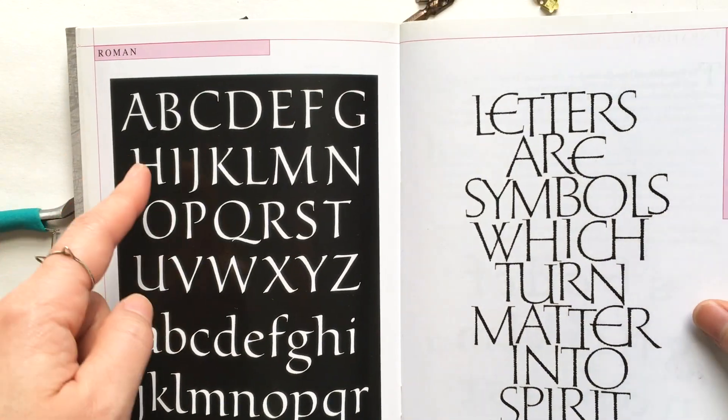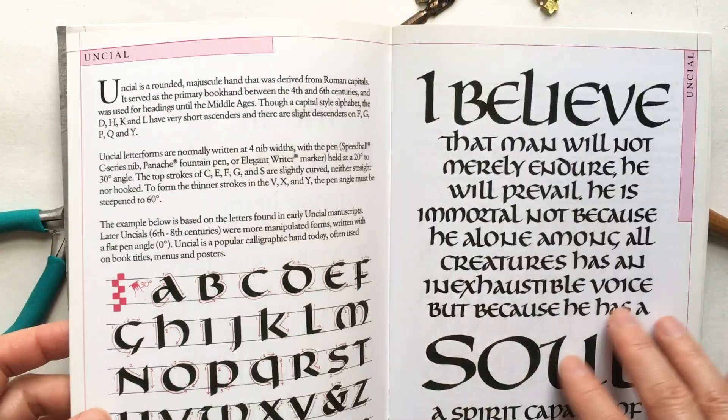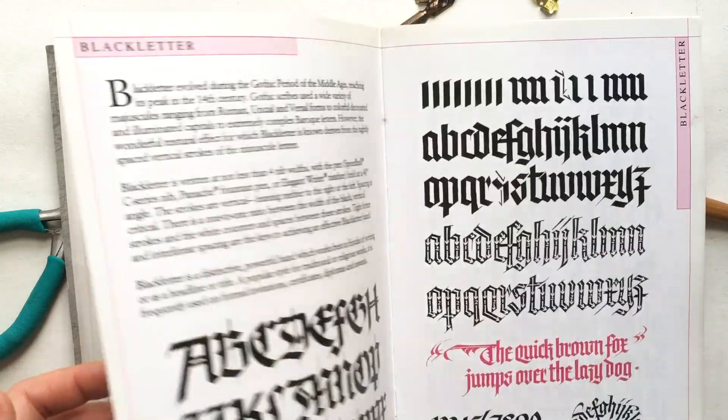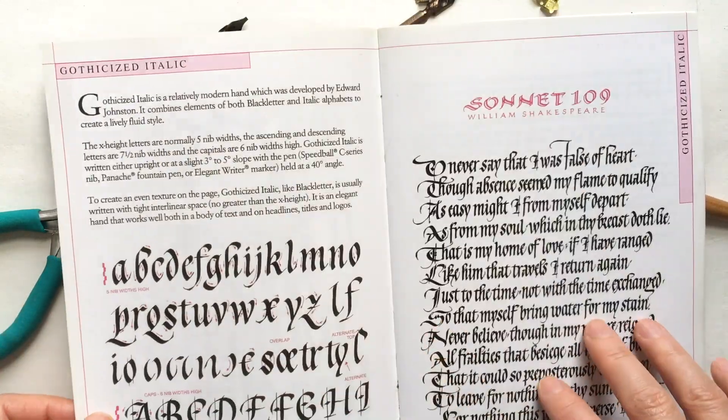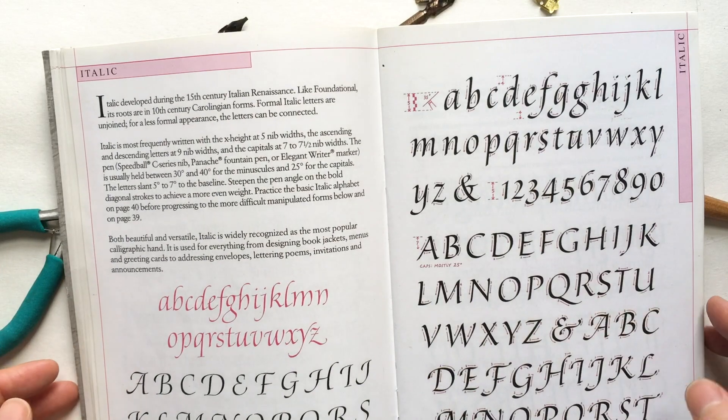Broad edge nibs are used to write calligraphy styles such as Roman style, foundational, uncial, Carolingian, black letter, gothic, Textura, italic, and italic.